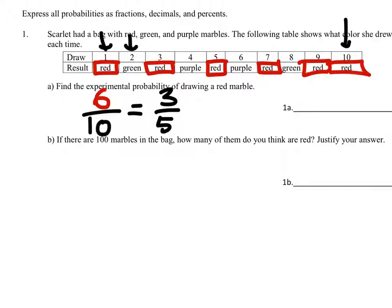Now, if that's all you write, minus two, because we also need the decimal, which if we divide, we get 0.6, and a percent, which would be 60%.